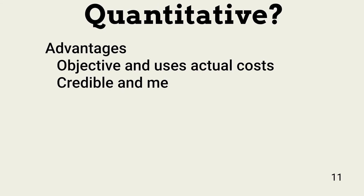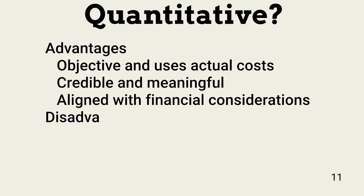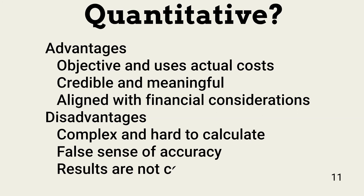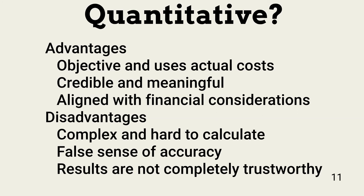The advantages of using quantitative assessments include their objectiveness. Calculating actual dollar numbers tends to reduce personal gut feelings. When done correctly, this approach is credible and aligned with financial risk considerations. The disadvantages begin with the complexity of the approach. Determining all the costs associated with information asset compromise is not easy and requires significant time. If not done correctly, the numbers can result in a false sense of accuracy, and the results may not be considered trustworthy because of the complexity involved.